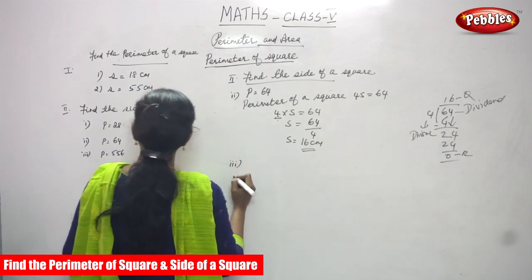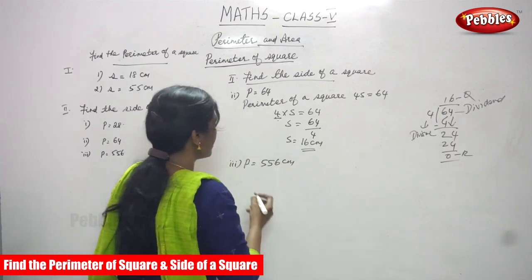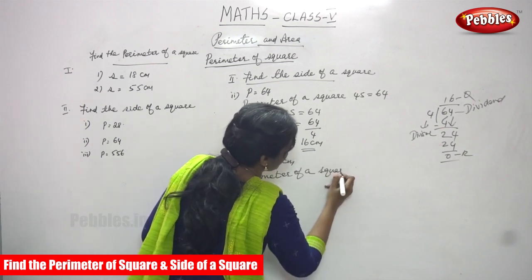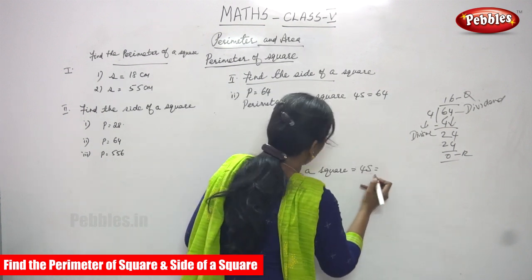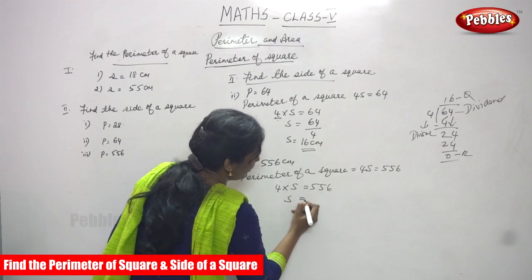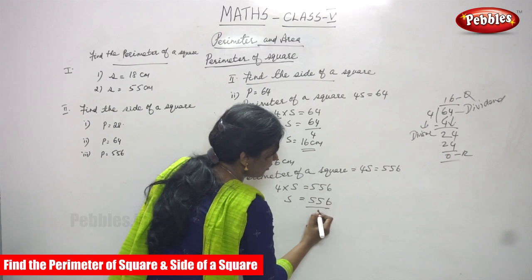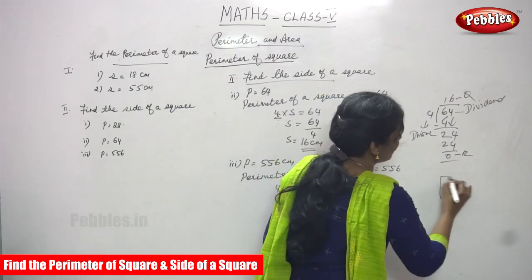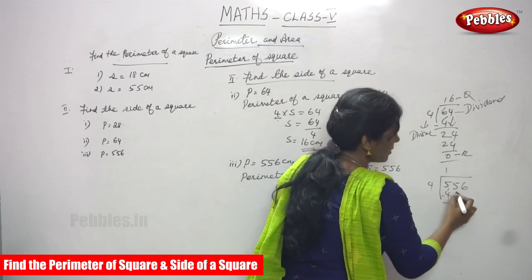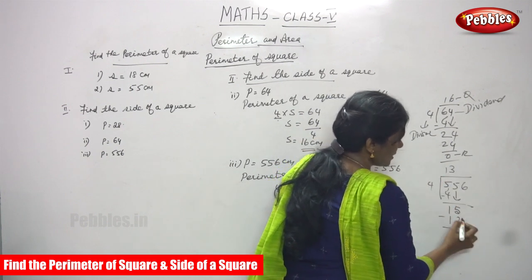The next is a little bigger number, so you must be very careful. P is equal to 556 centimetres. The perimeter of a square is a greater number. Perimeter of a square equals 4S equals 556. That means 4 into S equals 556. Now, you have to find S. This 4 in multiplication goes to the opposite direction — it becomes division. So, 556 divided by 4. Take 5: 1 four is 4, 5 minus 4 subtract gives 1. Bring down the next digit: 15. Divided by 4 — 4 threes are 12. Subtract: 15 minus 12 gives 3.